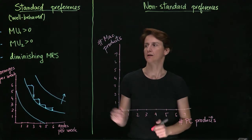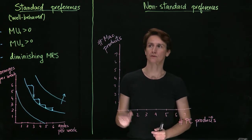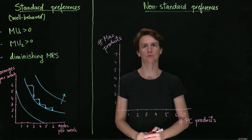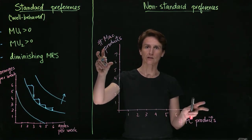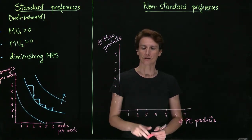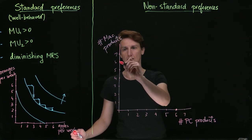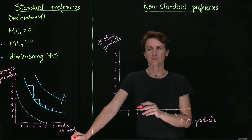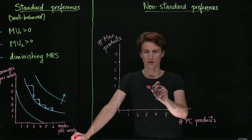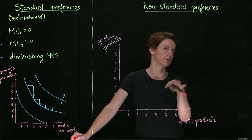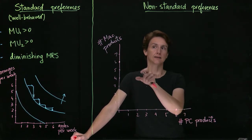We can even imagine a case where MRS is increasing as we move in this direction. Suppose that we're graphing the number of PC products in your household versus the number of Mac products. That might include computers but also tablets, phones, and so on. We don't have to take a stance over which is better. However, what we should think about is whether it's better to have all of one type or a combination. The idea would be that if they're equally good, so that having six PC products is just as good as having six Mac products, however, if you have a mix of the two, let's say three of each, it's possible that that would actually make your life harder because now you need to know two separate systems.